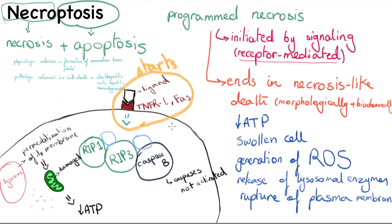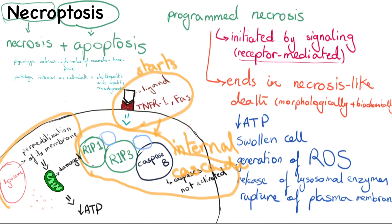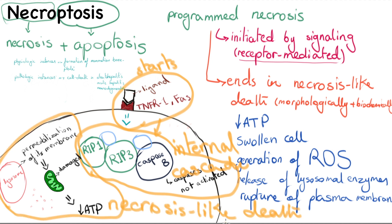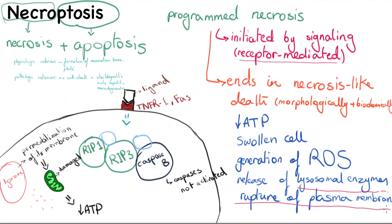In a nutshell, necroptosis starts with external signaling similar to the extrinsic apoptosis pathway. These signals initiate an internal cascade that results in a necrosis-like death involving digestive enzymes, cell membrane rupture, and a host inflammatory reaction.